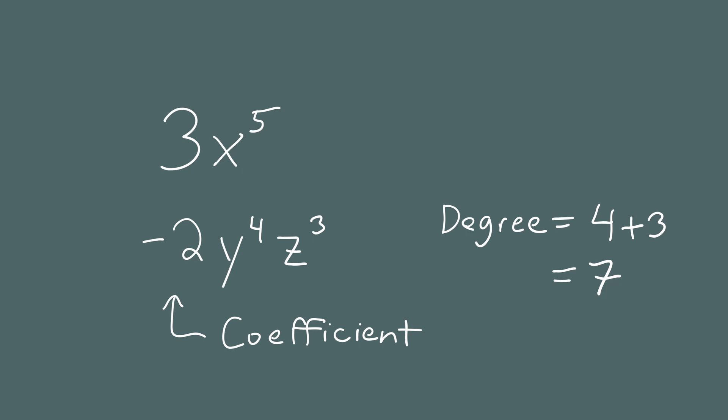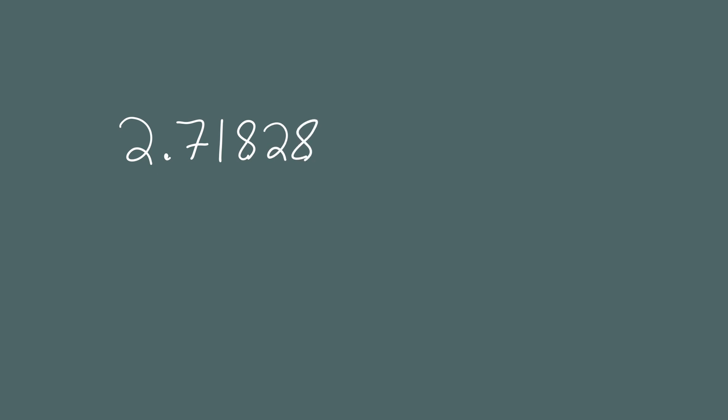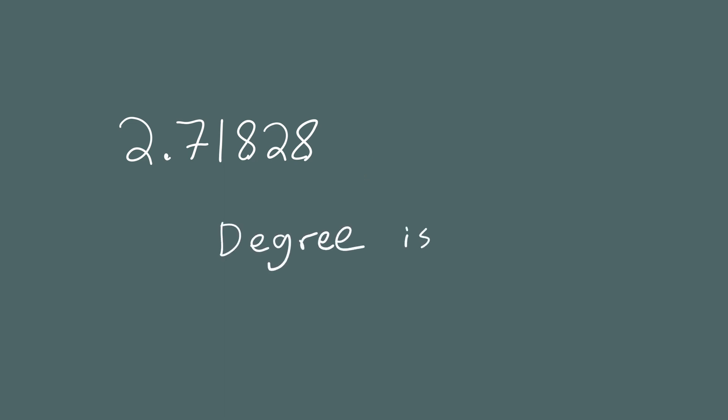Now let's look at a monomial that's simply a number, like 2.71828. When a monomial has one variable, the degree is the exponent; with more than one, it's the sum. But here there's no variable. The trick is that every variable to the 0th power equals 1, so 2.71828 is the same as 2.71828 times x to the 0th power. The coefficient is 2.71828 and the exponent is 0, so the degree of a constant term is 0.